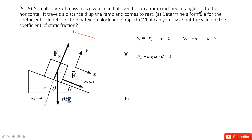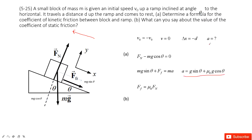In the Y component, we have N minus mg·cos(θ) equals zero. In the S component, we have friction plus mg·sin(θ) equals mass times acceleration. This friction is the coefficient for kinetic friction times the normal force. From these three equations, we can get the acceleration and use it as a bridge to solve for mu_k.